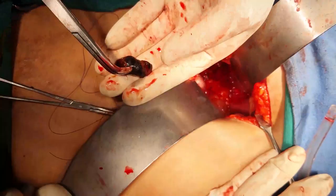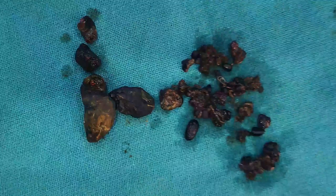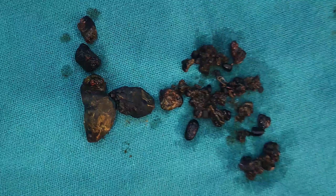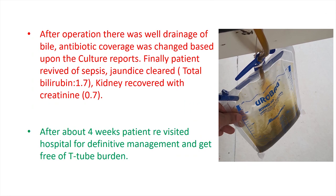All possible stones were extracted from the left liver, right anterior pedicle, common bile duct, and remaining parts of the liver as far as possible. After the operation, there was adequate drainage of bile. Antibiotic cover was changed based on bile culture reports. The patient revived from sepsis and jaundice cleared with total bilirubin falling to 1.7 from 5.5.